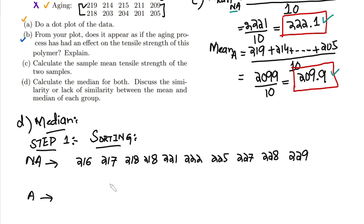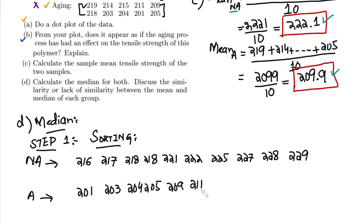For the aging data the sorted values are: 201, 203, 204, 205, 204, 205, 209, 211, 214, 214, 214, 214, 215, 218, and 219. We can see that the total number of points in each data set is 10.